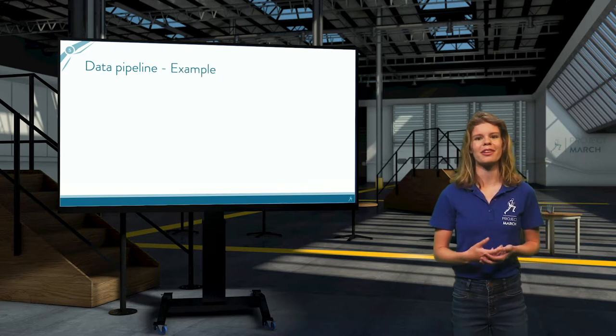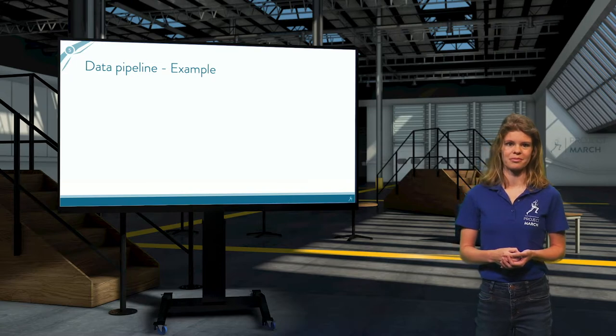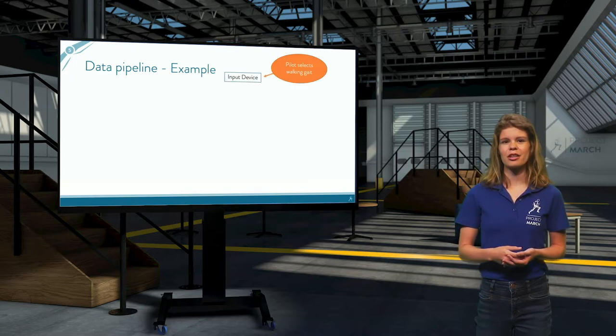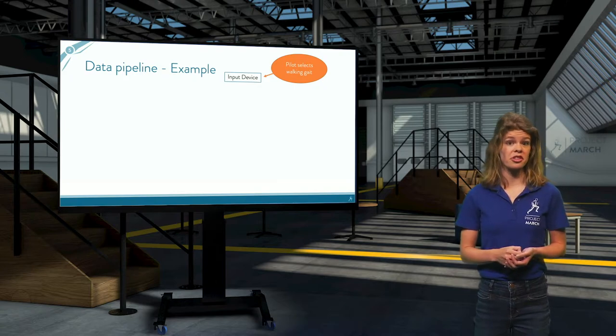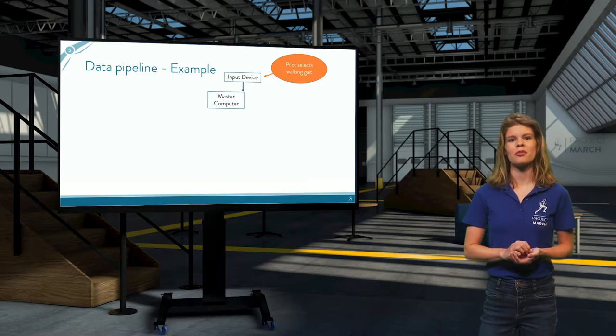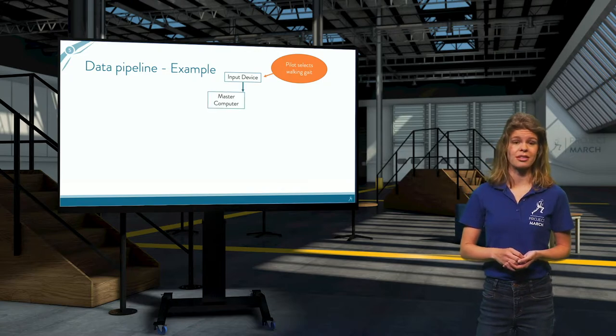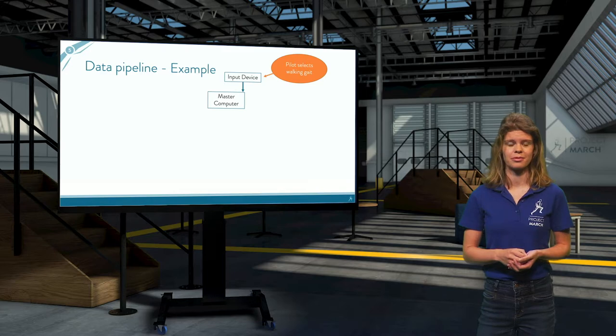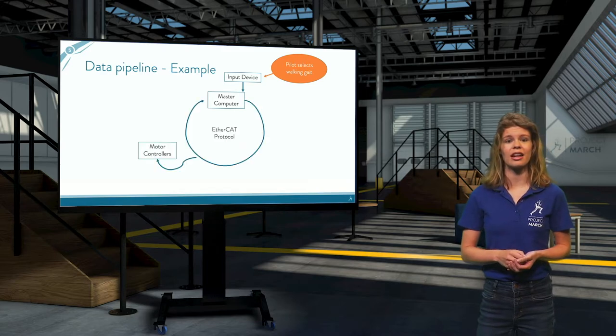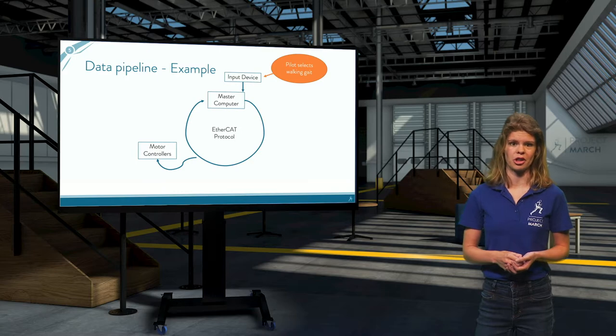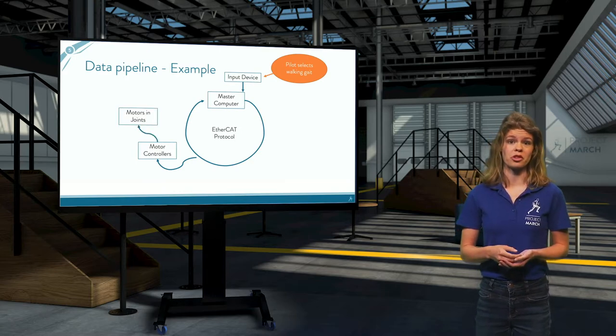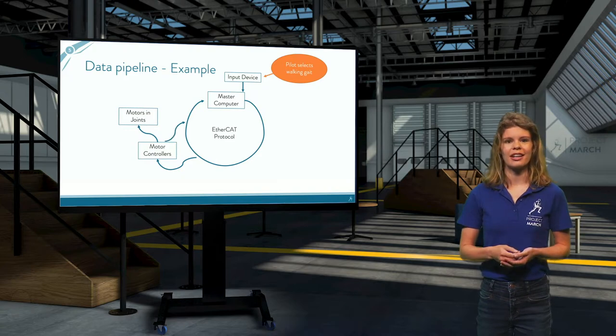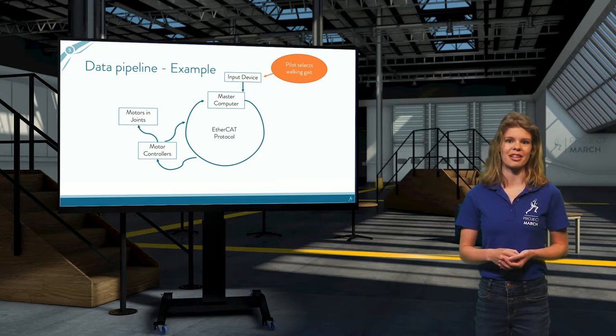To make the data pipeline easier to understand, let me give you an example. Say the pilot selects the walking gate in their input device, and the first step of this gate is to lift the left ankle. The data is then processed from the input device to the master computer. The master then first sends data to the left ankle motor controller. This motor controller then starts the motor of the joints and sends data on the motor performance back to the master.